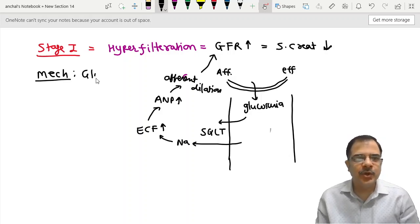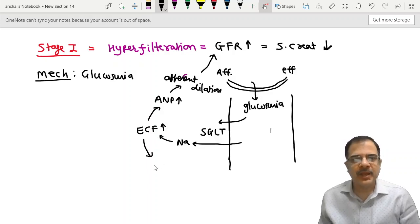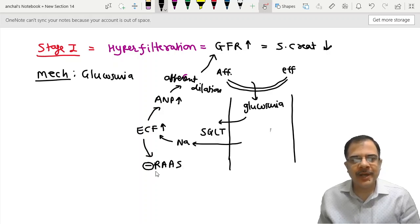So this is the mechanism of diabetes stage 1 nephropathy. The mechanism is glucosuria. And from this flowchart, you can also understand when there is high ECF, whenever ECF volume is high, RAS is inhibited. So low renin, low aldosterone will happen here, that we will discuss in renal tubular acidosis.